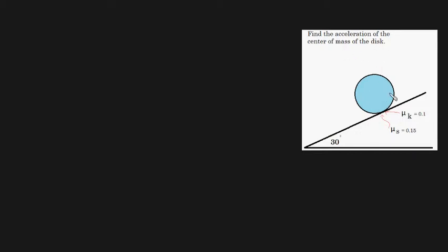G'day guys. In this particular video I'm going to be showing you how to find the acceleration of the center of mass of this disk, which is going down this slope just here, which is 30 degrees from the horizontal, and the friction force. The friction coefficients between this slope and this disk are μs = 0.15 and μk = 0.1. I strongly recommend you have a shot at this yourself first and come back when you're done.